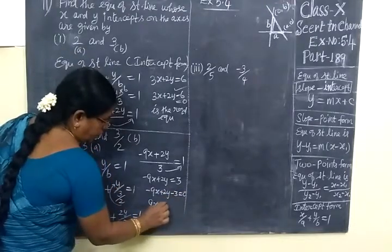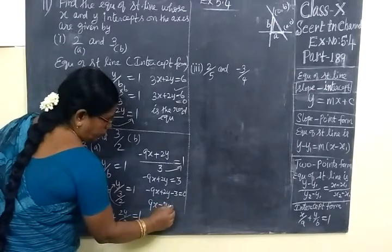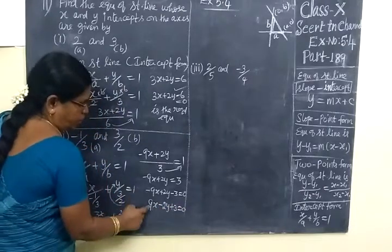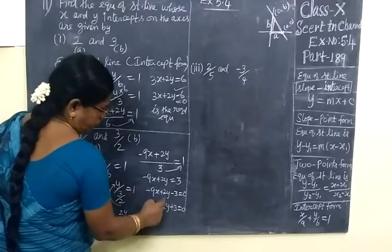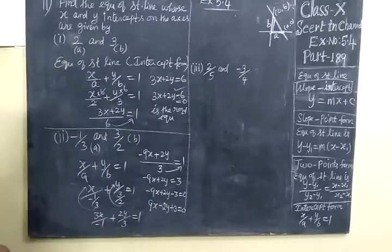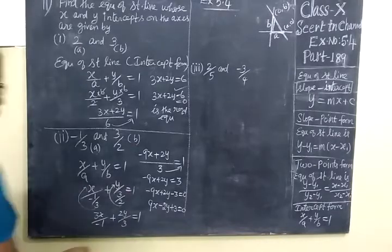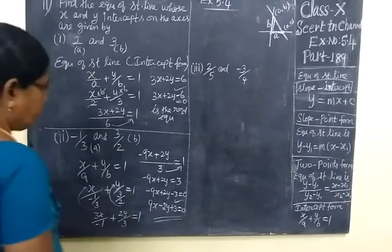Completely change the sign. So you want to write in order: X term, Y term, constant term. X will be always positive, so you change the sign. So we check the answer: 9x minus 2y plus 3 equal to 0. So this one is correct. Then after that.